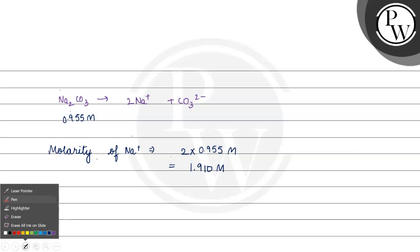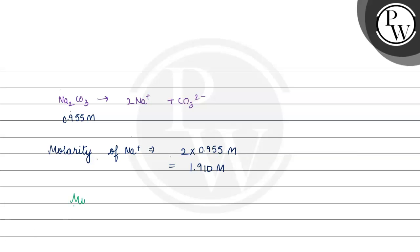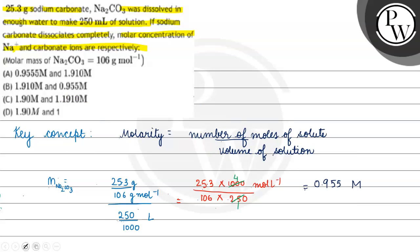The molarity of carbonate ions is 0.955 molar. Coming back to the question, the correct answer is Option B. I hope you understood it well. Thank you and all the best.